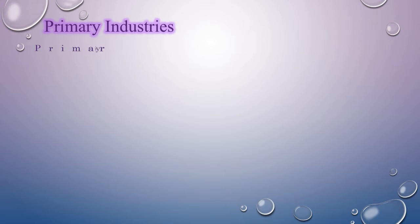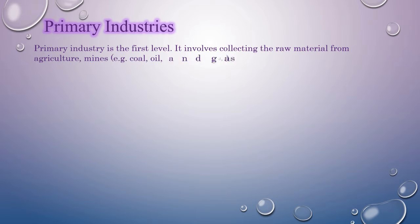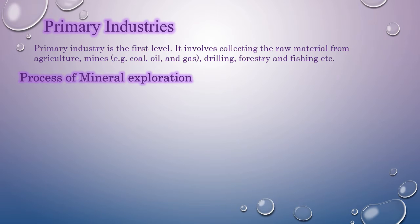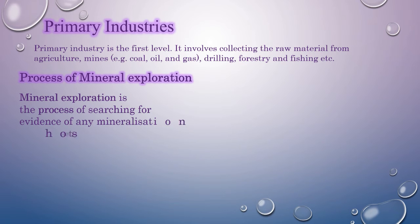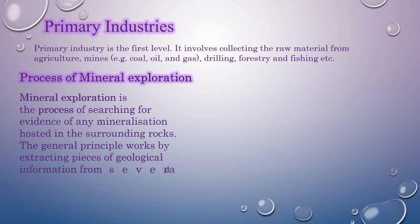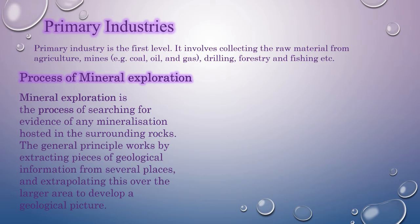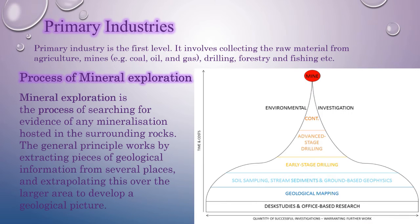Primary industry is the first level. It involves collecting raw material from agriculture, mines, etc. Examples include coal, oil and gas drilling, forestry, and fishing. The process of mineral exploration is searching for evidence of any mineralization hosted in the surrounding rocks. The general principle works by extracting pieces of geological information from several places and extrapolating this over a large area to develop a geological picture.